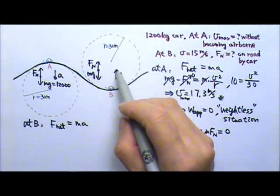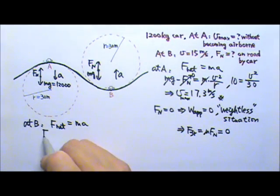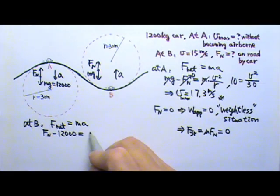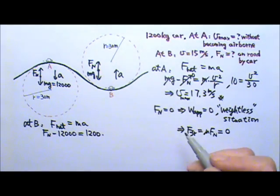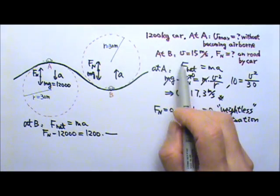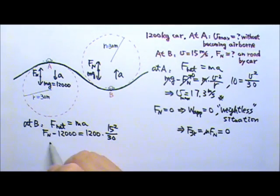Since the acceleration goes up, that means the upward force is bigger. So when we write the net force equals to MA, we have normal force minus mg, that will be 12,000, equals to M times the acceleration, which is V squared over R, 15 squared divided by 30. So this will give us the normal force that's 21,000 newtons.